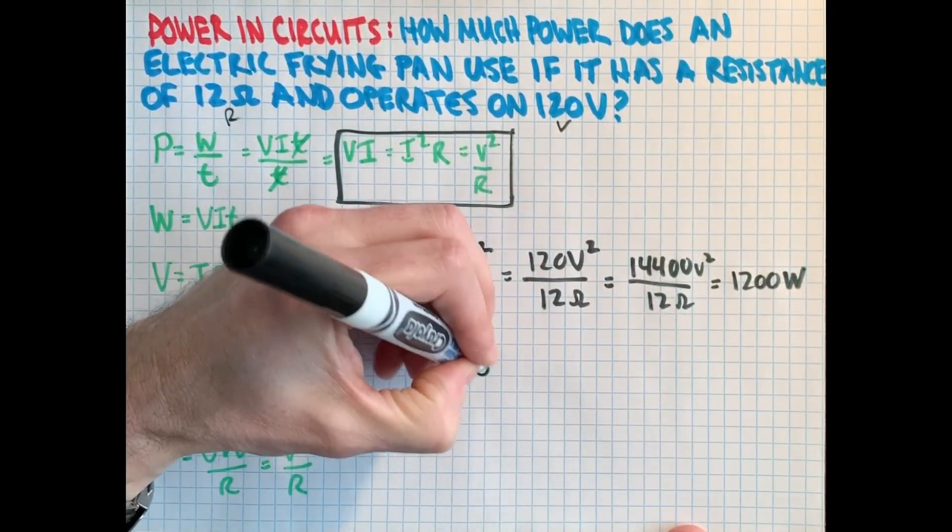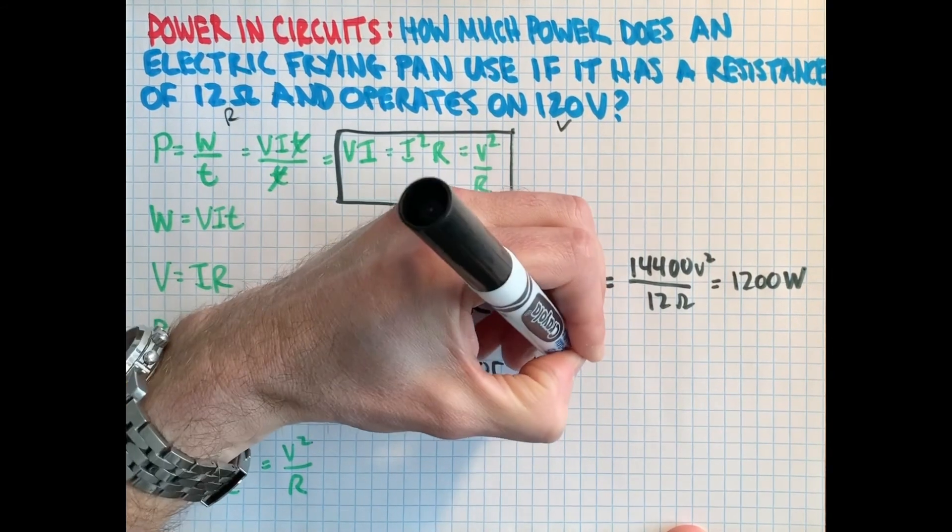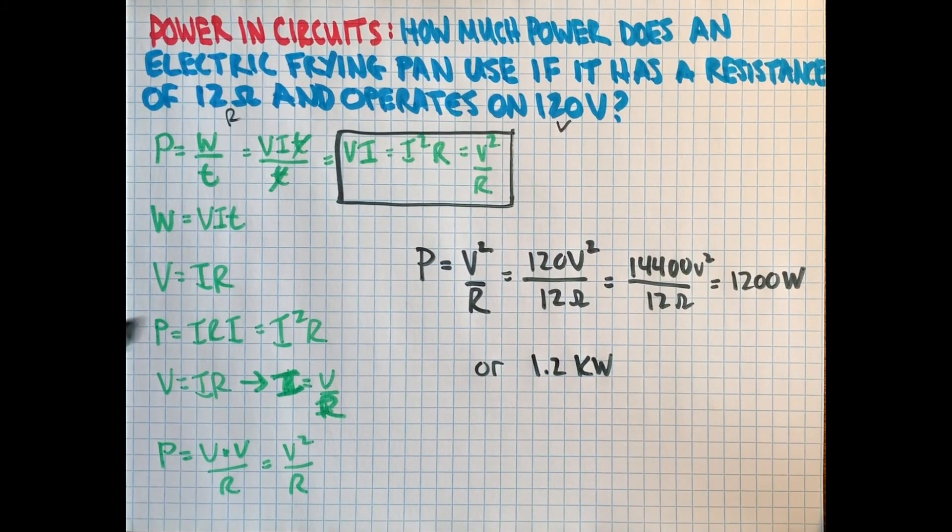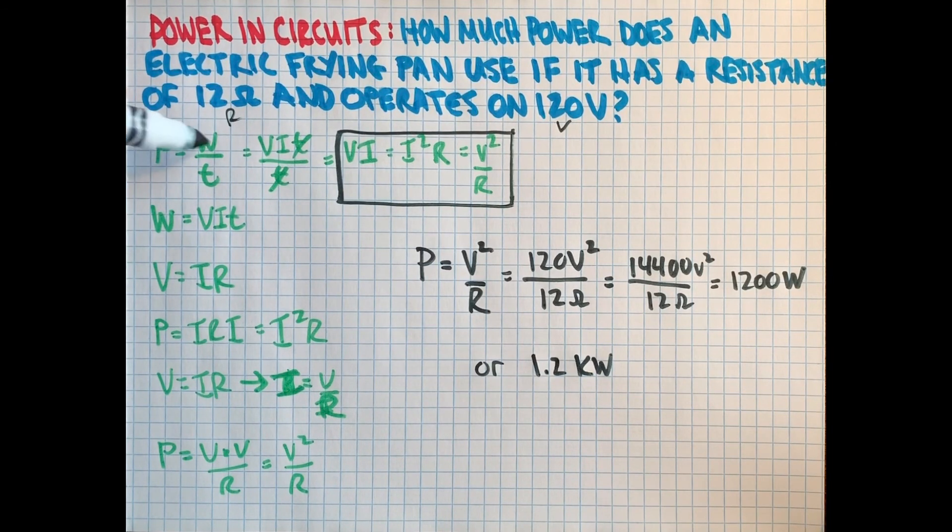Or if you wanted to write it another way, 1.2 kilowatts, which you might recall from hearing your power bill is in kilowatt hours, which again, if you take the watts, or sorry, the power and times it by time. So your kilowatts times your time, you get energy back out, which is how you are billed.